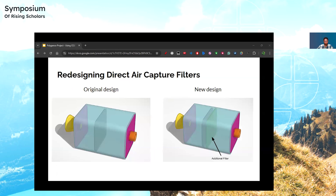On the left is an example of our current direct air capture filters. The yellow cone in the front is the intake fan, the blue cube is the box containing the filter sheet inside, and the red cylinder on the outside is the exhaust and excess particle output. A new model idea I had was to implement two filters. In this new model, you can see on the right it has multiple filters inside one unit. Although it might be more expensive, this would help capture multiple greenhouse gases without needing to create a whole new filter.